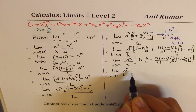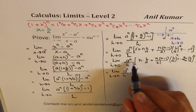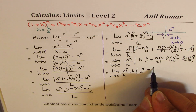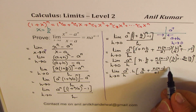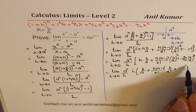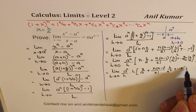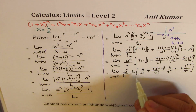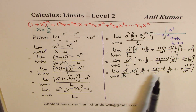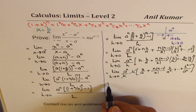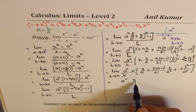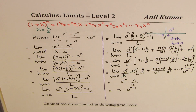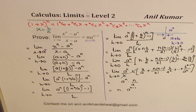After factoring out h, we have a to the power of n over h times h, leaving us with n/a plus n(n−1)/2! times h/a squared, and so on, with the last term being h to the power of n−1 over a to the power of n. The h cancels, and substituting h = 0, we get a to the power of n times n/a, which gives n times a to the power of n minus 1. That is exactly what we wanted to prove.